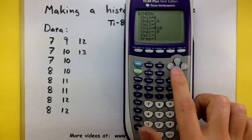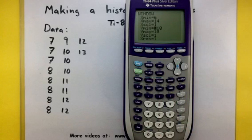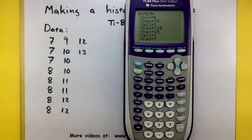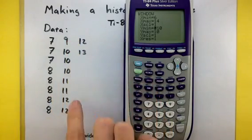Let's scroll on down to the Y values. The Y values are for the vertical direction, and so we want to put numbers that involve how many of these things we have. So, notice how I have 3 sevens, and I have 5 eights, and it looks like only 1 nine, 3 tens.